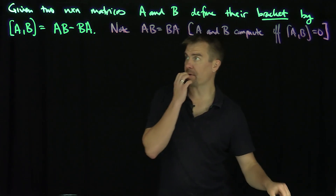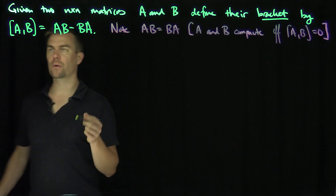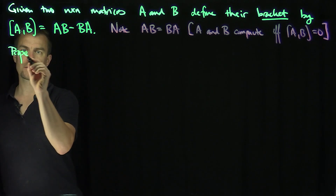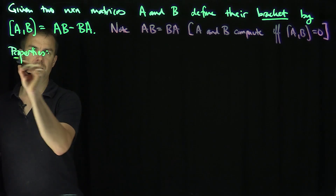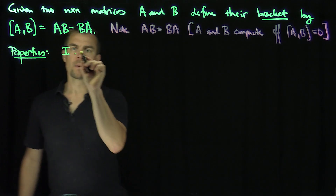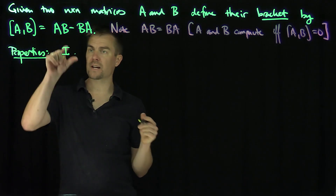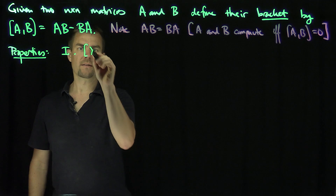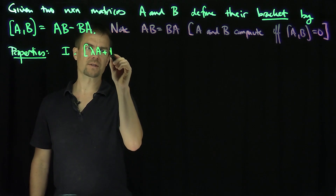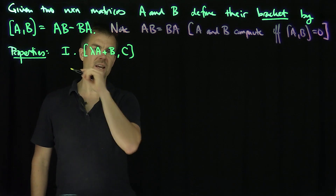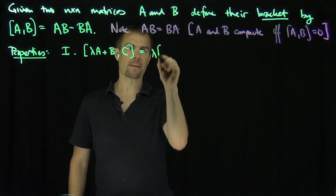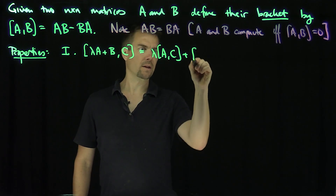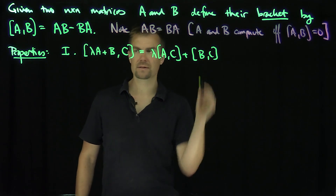Let's discuss some other properties of this bracket operation. What are some elementary properties of this bracket? There are many properties. Property one is that it's linear in the first and second slots. So I have lambda A plus a matrix B, bracketed with C.